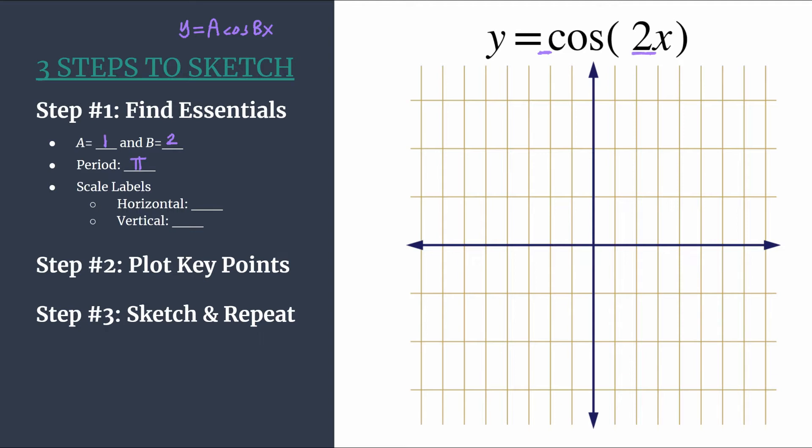So now we can decide what scale labels to use, and this is how we are going to count and label our tick marks. So with this method I like to take the period and divide it by 4 and use that value for my horizontal scale labels. Then this just ensures that our key points in the next step, so our pattern, all those key points will align with our horizontal tick marks. And that just makes for a nice neat graph. So we will use pi over 4 or just period divided by 4 to label our horizontal tick marks.